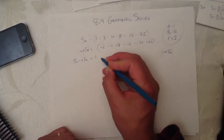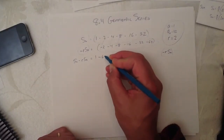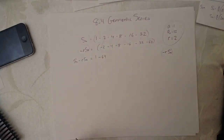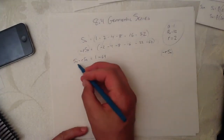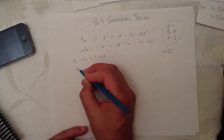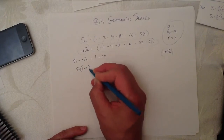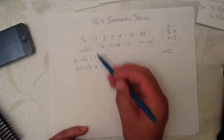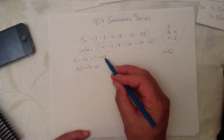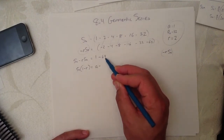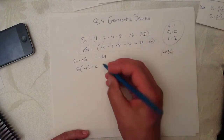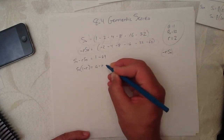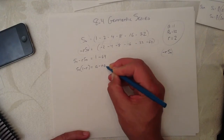That equals 1 minus 64. And you say, whoop-dee-doo. But I say let's factor out the S of N here. So we've got S of N times (1 minus R) equals A — which is the first one — minus 64. And what is 64? That is R times the last term, or R times A of N.